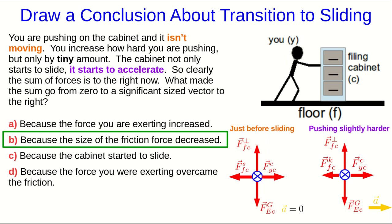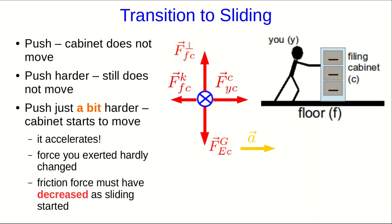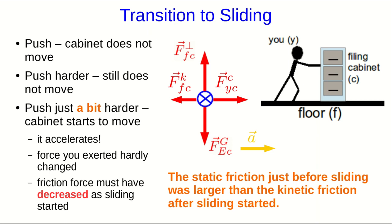In other words, the only possible explanation is that the friction force decreased in size — the kinetic friction must be smaller than the static friction that it replaced when the cabinet started to slide. The fact that when the filing cabinet starts to slide the friction force decreases is an important observation that we're going to have to explain. So keep in mind that the static friction just before the sliding was larger than the kinetic friction after sliding started.